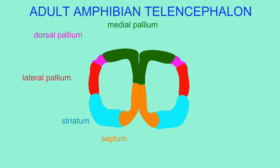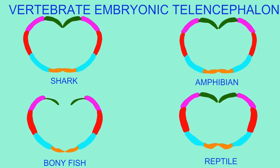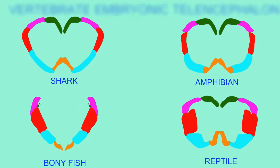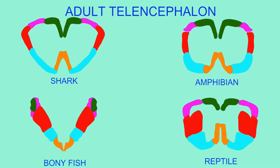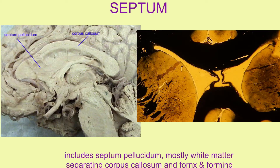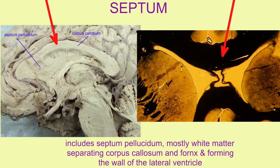So it is under the pallium, it is part of the sub-pallium, and it was incorporated into a midline structure. In humans, the septal region can be divided into the septum pellucidum.